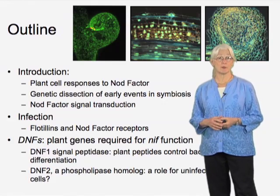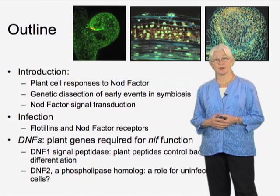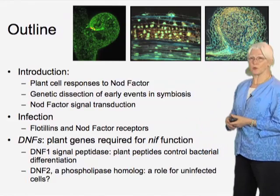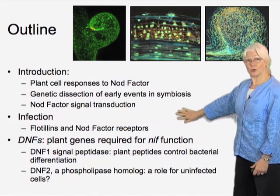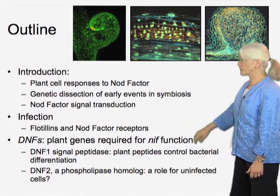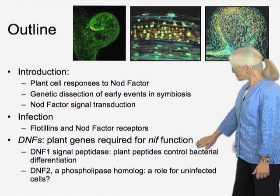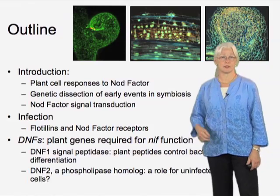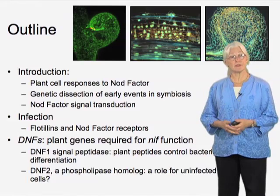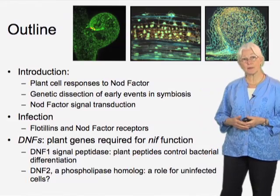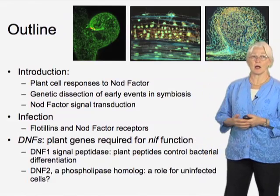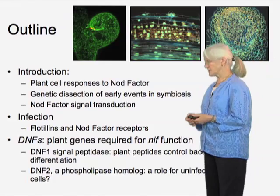At the beginning, I'll give some introduction reviewing the dynamics of how bacteria and plants interact. Then I'd like to talk about recent work in our lab, first about infection and about a group of proteins called flotillins, and also about a nod factor receptor from the plant. Then I'd like to talk about two plant mutants, DNF1 and DNF2, which we've identified as defective in late stages of nodulation.